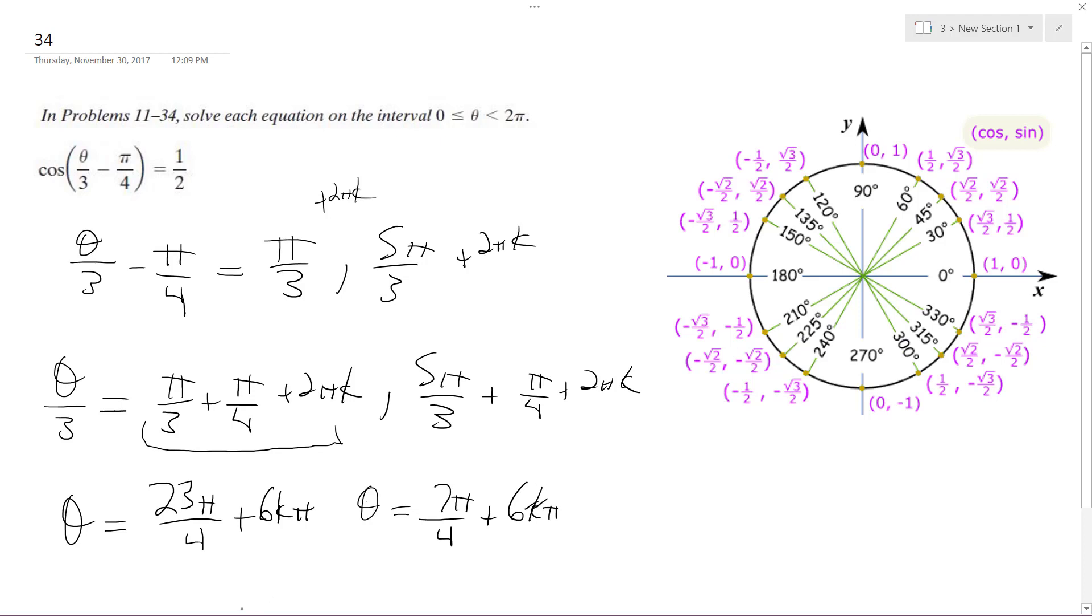So what's the co-terminal of this down here? 23 pi over 4. This is actually a valid solution, and the reason why is because we want to solve the equation on the interval, so wherever it solves between 0 and looping around, even though this number is bigger than 2 pi, it's still a valid solution. So theta is going to be equal to 7 pi over 4 and 23 pi over 4.